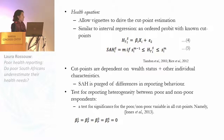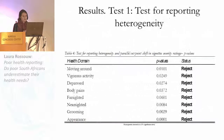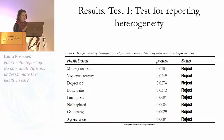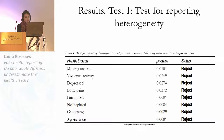To test for reporting heterogeneity, you use the reporting behavior equation and test for the joint significance of the poor variable across the cut points. The p-values from this test show that in all health domains tested, reporting homogeneity is rejected — there is evidence of the poor using different reporting scales than the non-poor. However, it's not yet clear whether the poor are underestimating or overestimating their health — that's the next step.